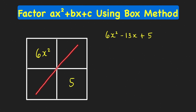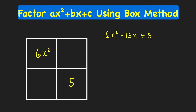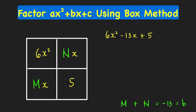Now for this other diagonal, we want to split this middle term. We're going to find two numbers, let's say m and n. Since we have to split that negative 13x, we have x and x, where the sum of m and n must be equal to negative 13, which equals b in the form ax squared plus bx plus c.